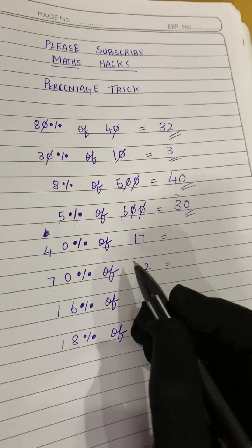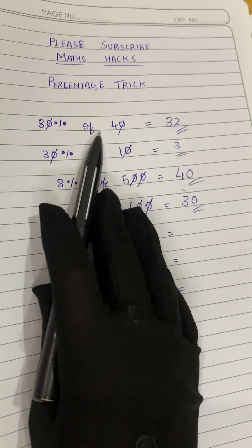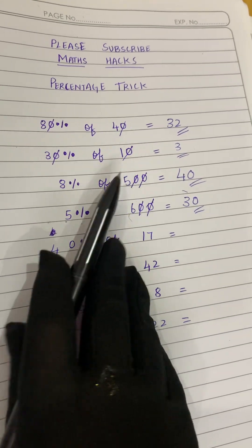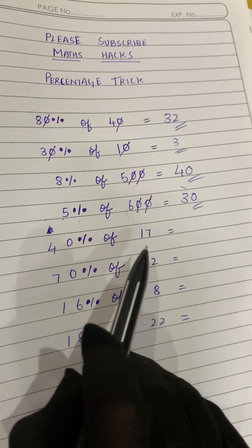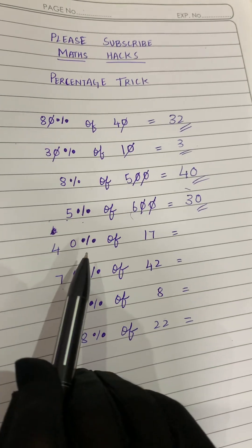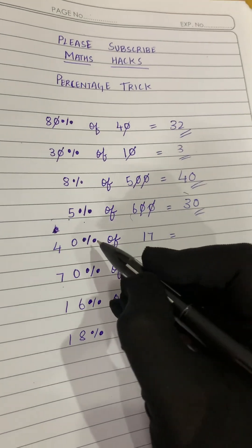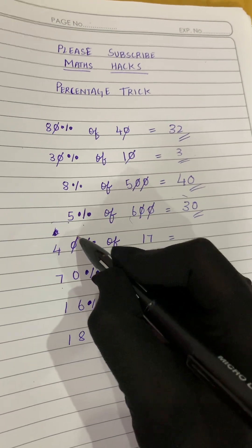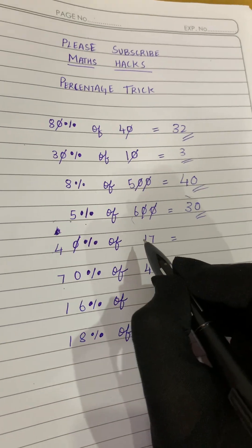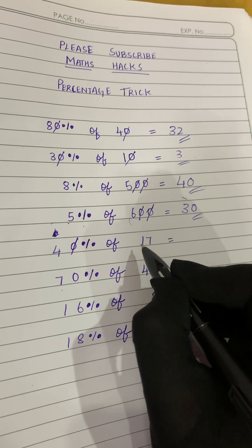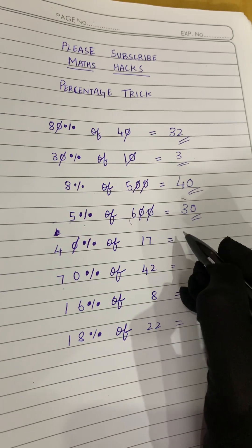Now over here, see here, all we got zeros right? 600, 500, 10, 40. But here they are asking us to find 40 percentage of 17. So same way, first we will cancel the zero. So what is left? 4 and 17, right? So 4 into 17 is 17 into 4. You will get the answer 68, right?